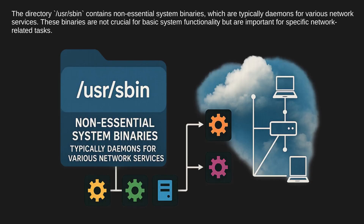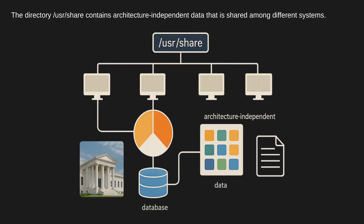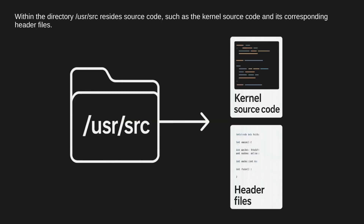The directory /usr/sbin contains non-essential system binaries, which are typically daemons for various network services. These binaries are not crucial for basic system functionality but are important for specific network-related tasks. The directory /usr/share contains architecture-independent data that is shared among different systems. Within the directory /usr/src resides source code, such as the kernel source code and its corresponding header files.